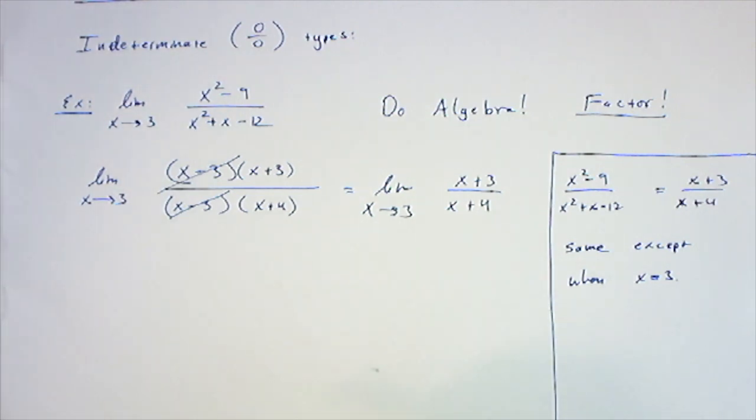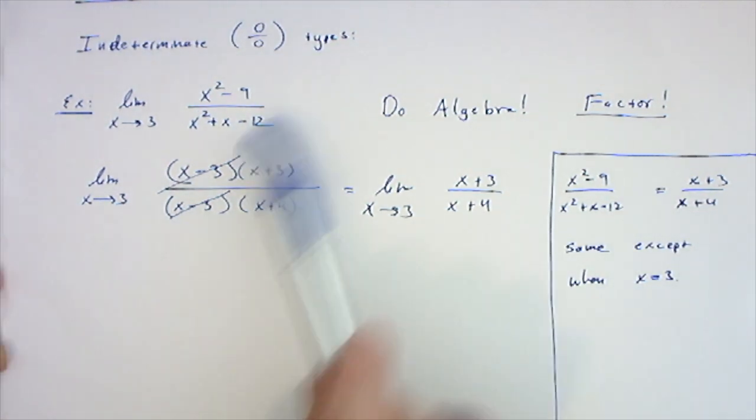For all intents and purposes, this function and this function are the same everywhere they need to be, which means that the limit of this and the limit of this also get to be the same, because these functions are the same everywhere close to 3, just not at 3.